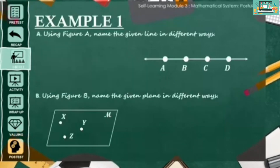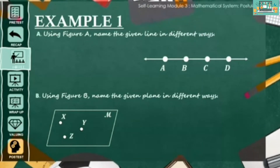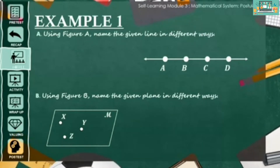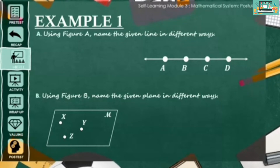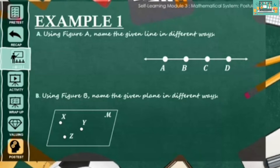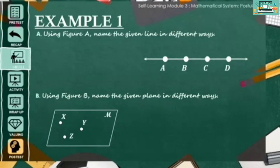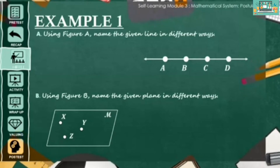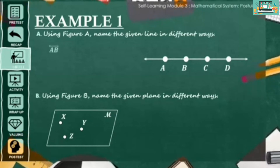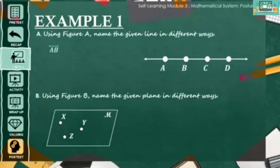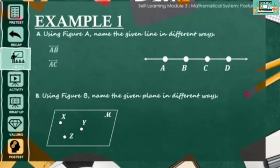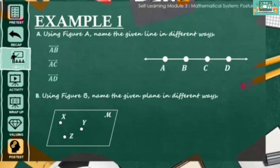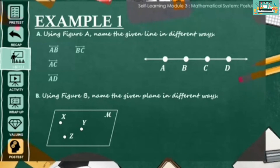Now that you are familiar with point, line, and plane, let us try to answer the following exercises. Using figure A, name the given line in different ways. Correct. So this line can be named as line AB, line AC, line AD, line BC, or line BD.